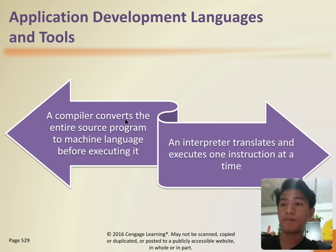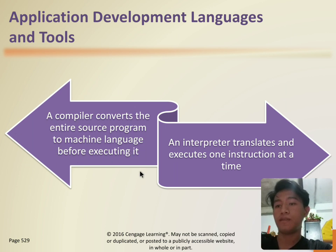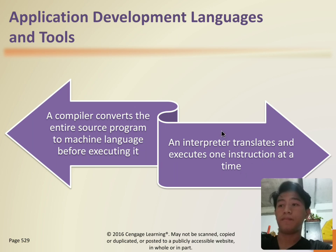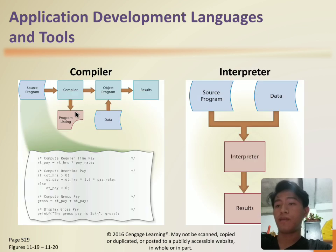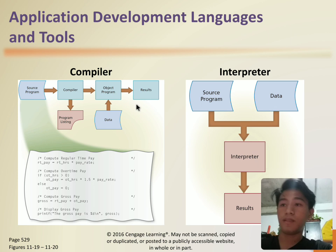A compiler converts the entire source program to machine language before executing it. An interpreter translates and executes one instruction at a time. This is the difference between a compiler and an interpreter.